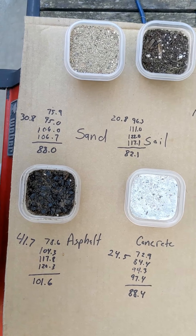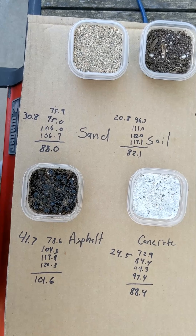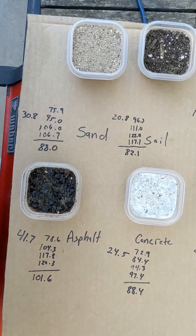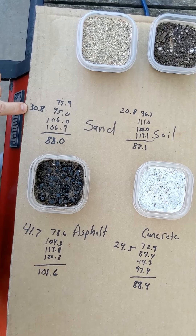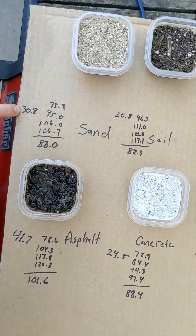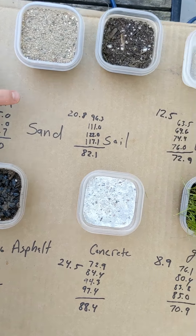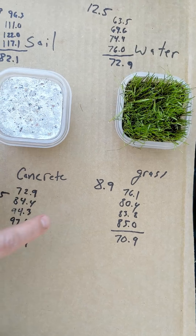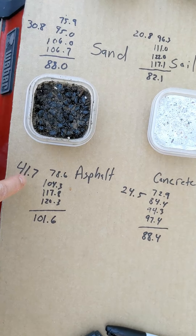Let's look at our results. I put a line where we took the materials out of the sun and calculated the change in temperature from initial to final. Sand had an overall temperature change in the sun of 30 degrees. Soil 20 degrees. Water about 12 degrees. Grass only 8. Concrete 24. And asphalt 41.